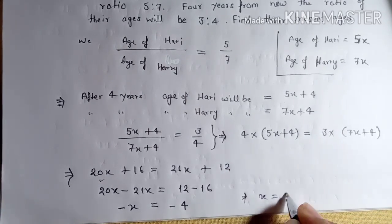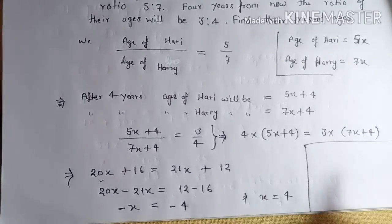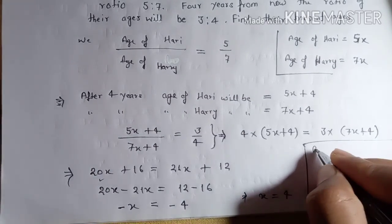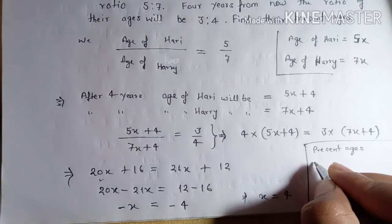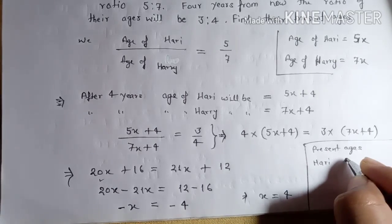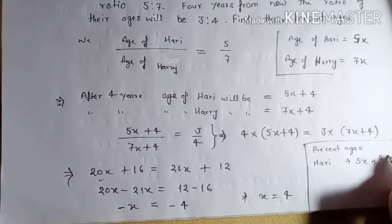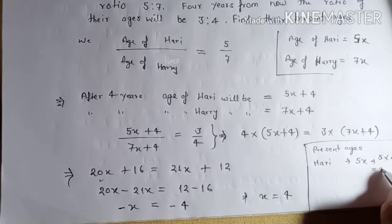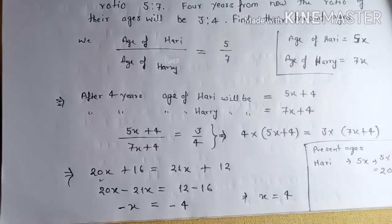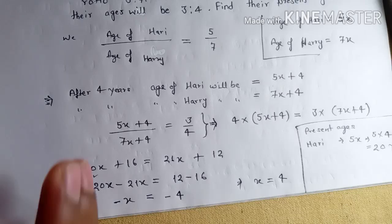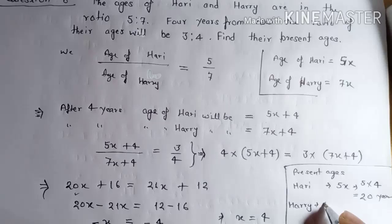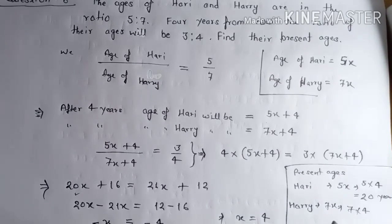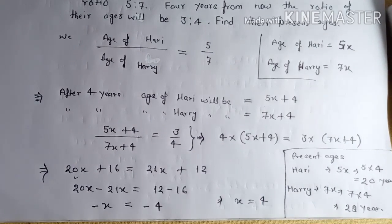You will get minus x equals minus four, so x is equal to four. It is said in the question to find the present ages. We considered the present age of Harry as five x, which is five times four equals twenty years, and the other Harry's age as seven x, which is seven times four equals twenty-eight years.